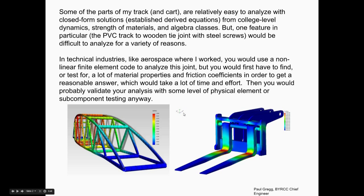Some of the parts of my track and cart are pretty easy to analyze — anybody with a college-level engineering degree and a strength of materials course can do this. But one feature was the joint between the PVC track and the wooden tie with the two 3.5-inch number 10 screws. That's a difficult thing to just analyze.